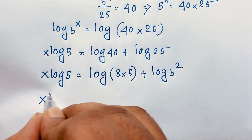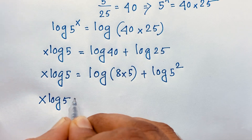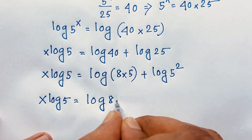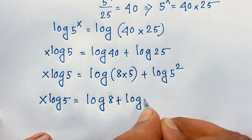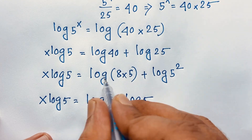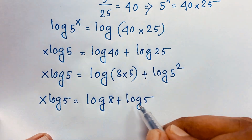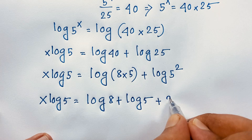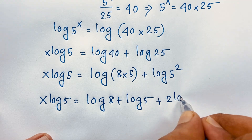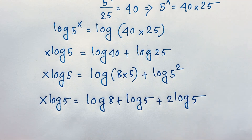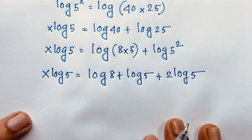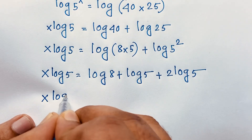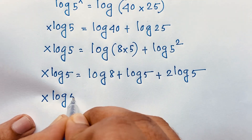x times log 5 is equal to log 8 plus log 5. We know that log AB equals log A plus log B. And these two — the 2 from log 5 squared — move in front: so 2 log 5.